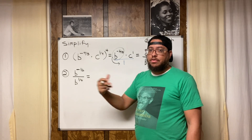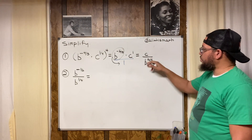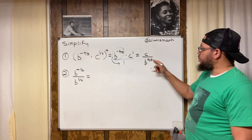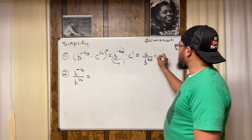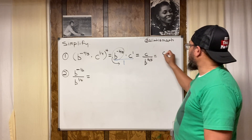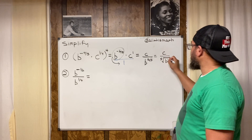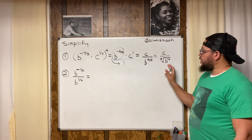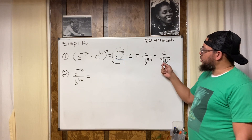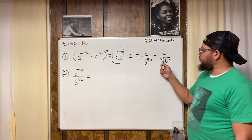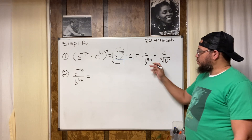So we have the power of a power rule and the negative exponent rule. Our final answer is c over b to the sixteen-fifths. If your teacher wants radical form, that becomes c over the fifth root of b to the sixteenth power. When you have a rational exponent, the numerator is the exponent and the denominator is the root.